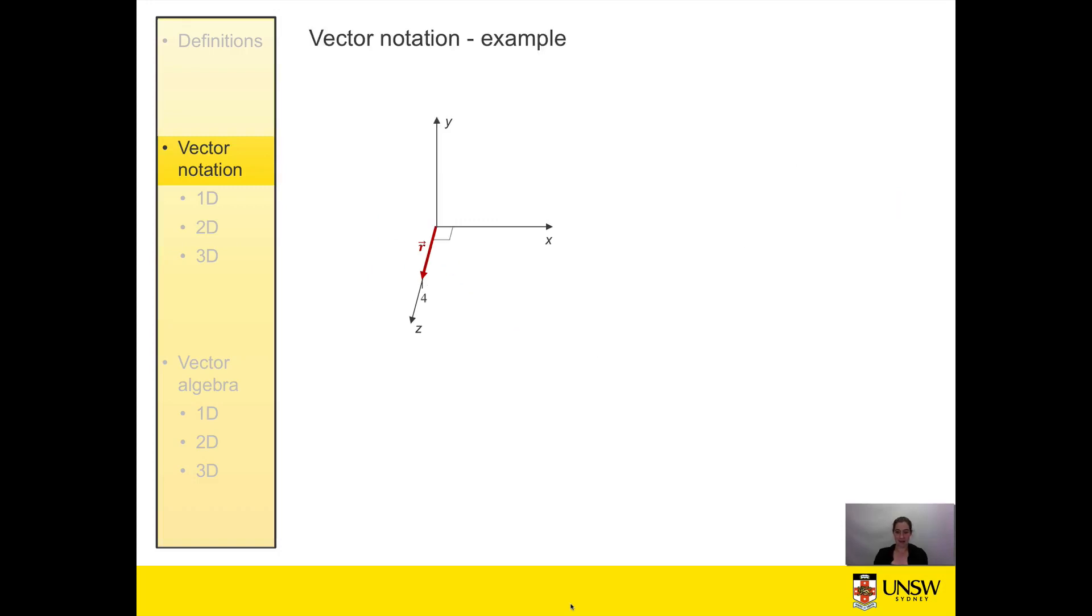As an example we have here our vector r. We can see the vector name is r and we can read off the diagram that the vector has a length of 4, so a magnitude of 4, and it's pointing in the positive z direction. So its unit vector is k. We would write our vector then as r equals 4k.